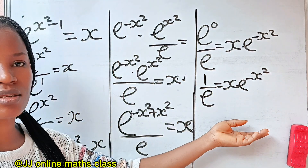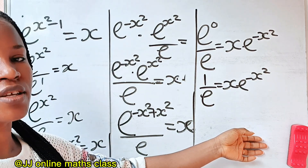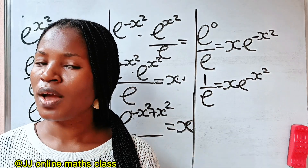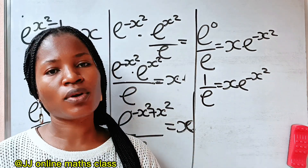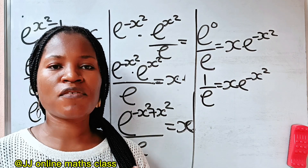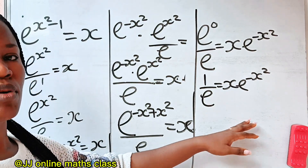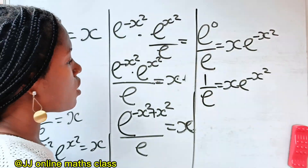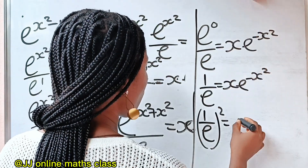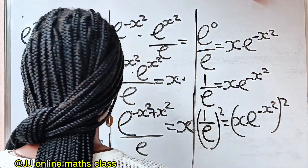Let us square both sides of this equation — I'm going to tell you why soon, just stay tuned. So if we square, I'm going to have one over e all squared is equal to x times e to the power of minus x squared, all squared.